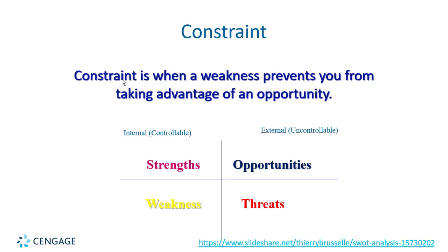Constraint is when a weakness prevents you from taking advantage of an opportunity. GameStop is a perfect example: their weakness was being a brick-and-mortar retailer without online downloading capability. They were a middleman — they'd sell games, buy them back, and resell used ones — but they were not mobilized for selling games online. That weakness prevented them from capitalizing on the opportunity of demand for downloadable games.